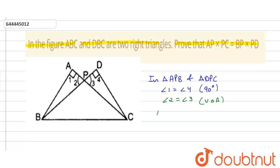So triangle APB is similar to triangle DPC by angle-angle criteria for similarity.